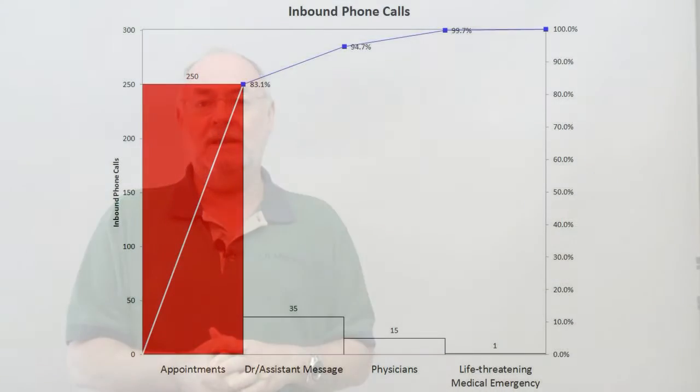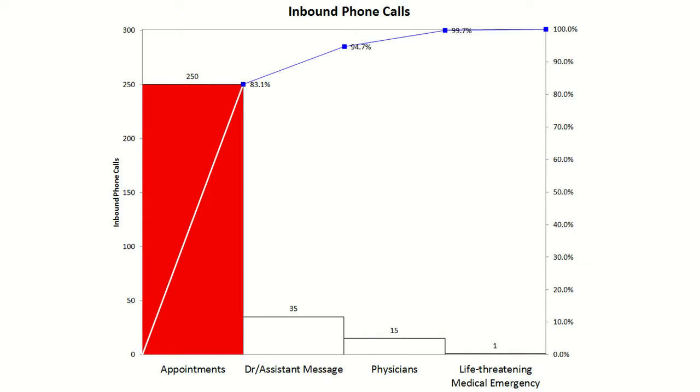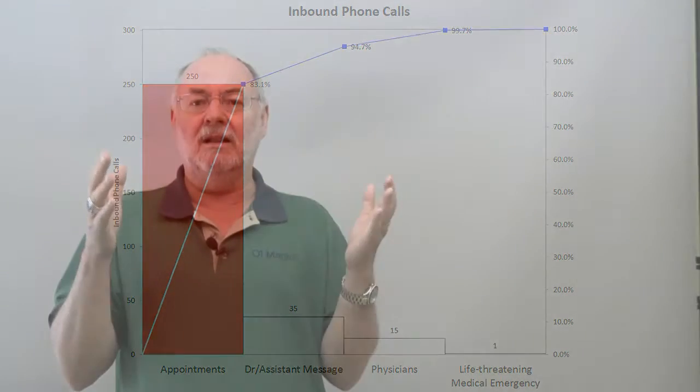The last one is if you want to reach the appointment desk press 3 now. And I would bet you that 80-90% of the calls into that office are for appointments. So why don't we put that up front? So maybe it would sound a little bit differently.